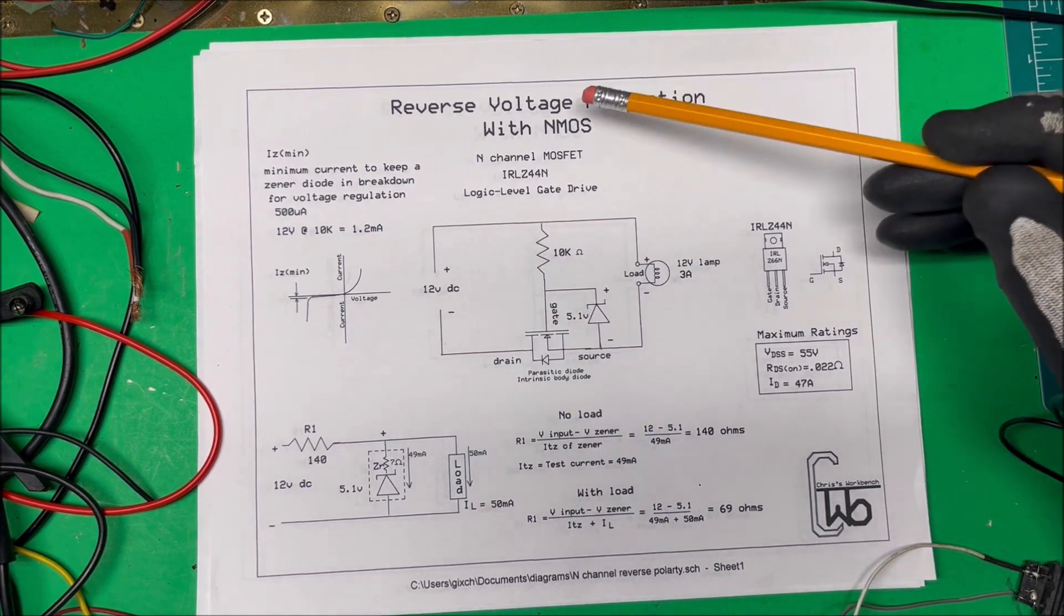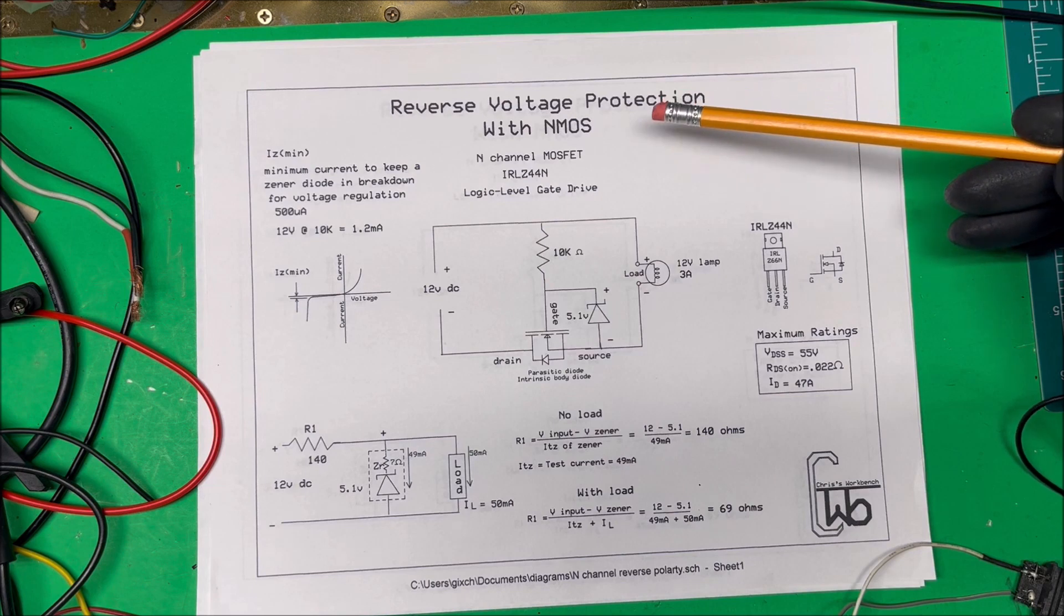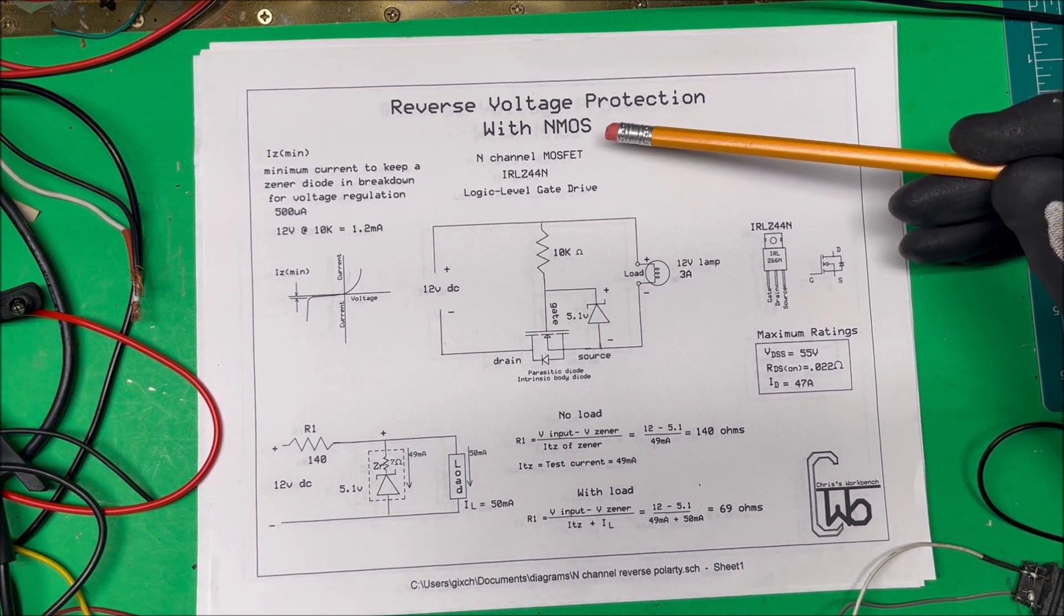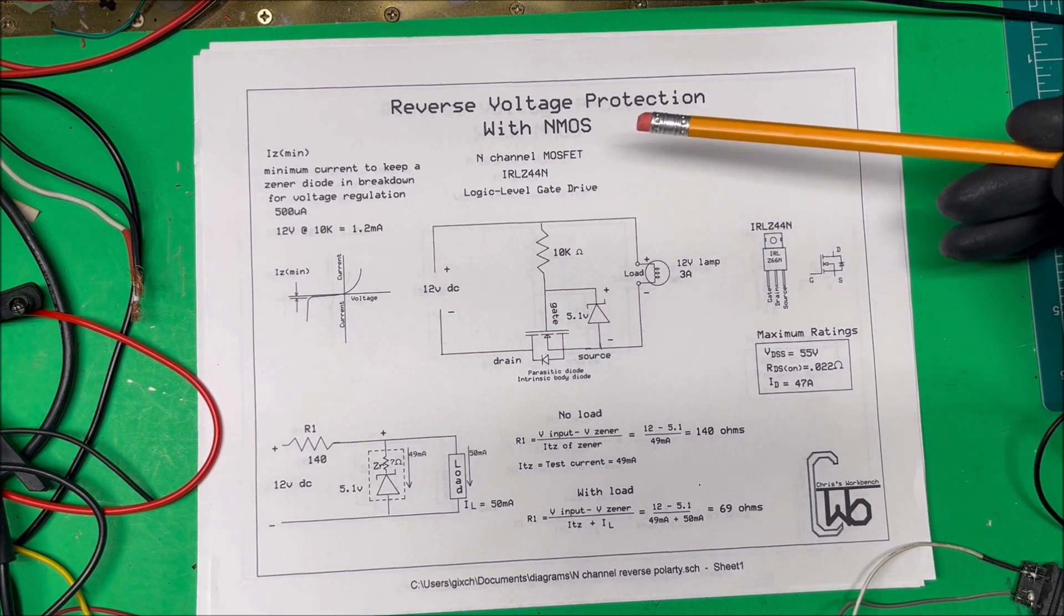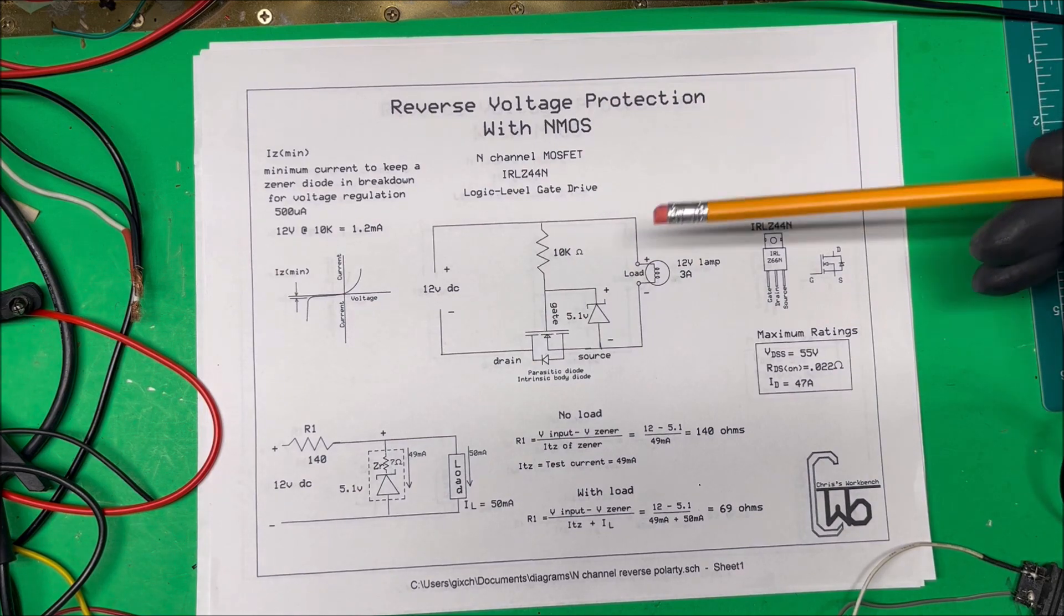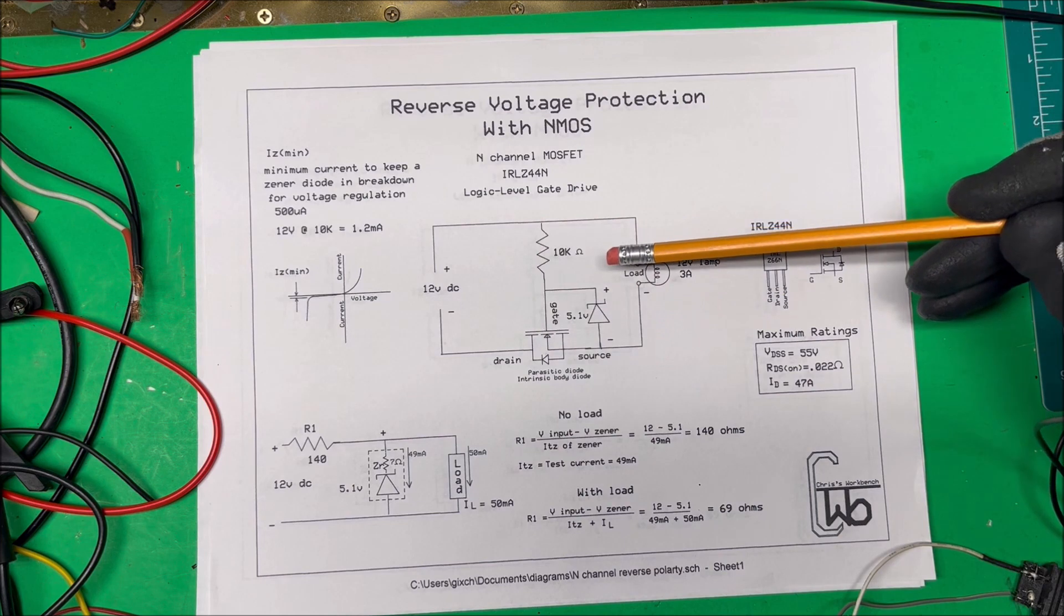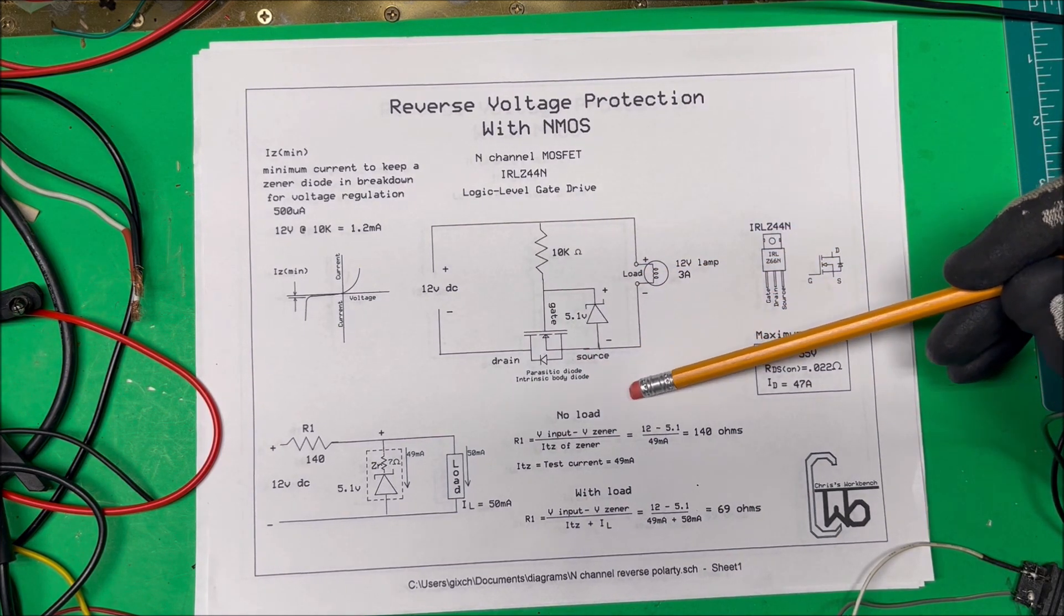This is a follow-up video for my reverse voltage protection. Last time we used a p-channel MOSFET and I got a comment that somebody wanted to do it with an n-channel MOSFET because they're cheaper and easier to come by and the actual RDS on resistance is lower on the n-channel MOSFET. So this is the diagram we're going to use to make our reverse voltage protection with an n-channel MOSFET.